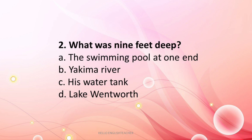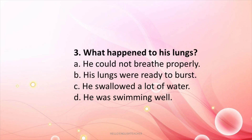Question 2: What was 9 feet deep? The options are the swimming pool at one end, Yakima River, his water tank, or Lake Wentworth. The swimming pool was 9 feet deep at one end and 3 feet at the other. So the answer is A — the swimming pool at one end. Question 3: What happened to his lungs? The answer is B — his lungs were ready to burst.